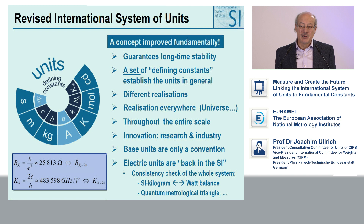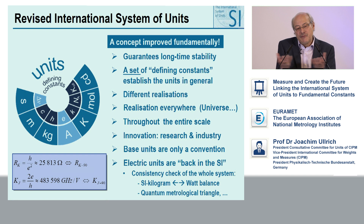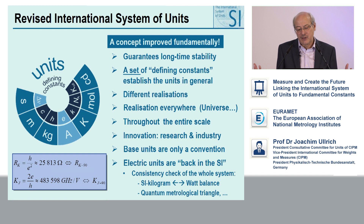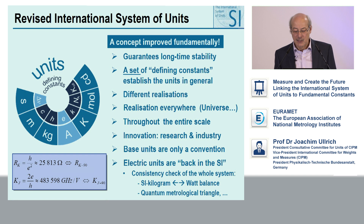For instance with the kilogram, we have two completely different ways — the Kibble balance and the silicon sphere — to realize the kilogram. If they come to the same value, we at the same time prove that the underlying equations are correct. So we have consistency checks of the equations as well. There are other possibilities, like having Ohm's law on a quantum level, which is sometimes also called the quantum metrological triangle.